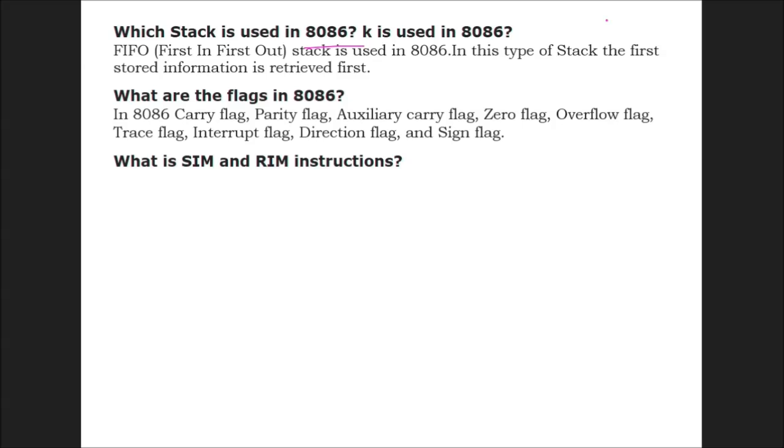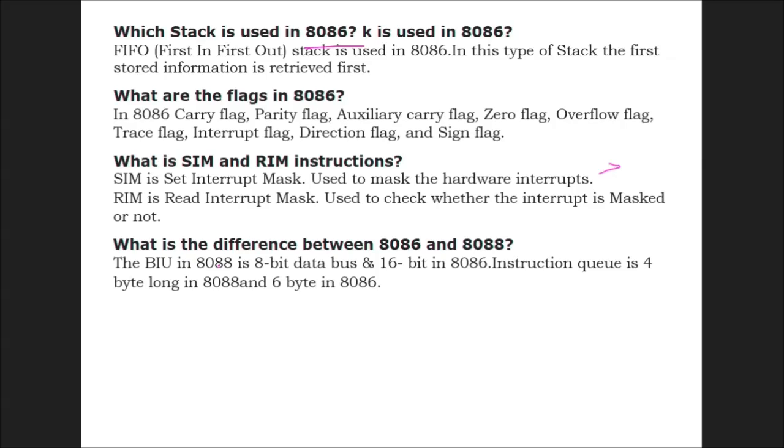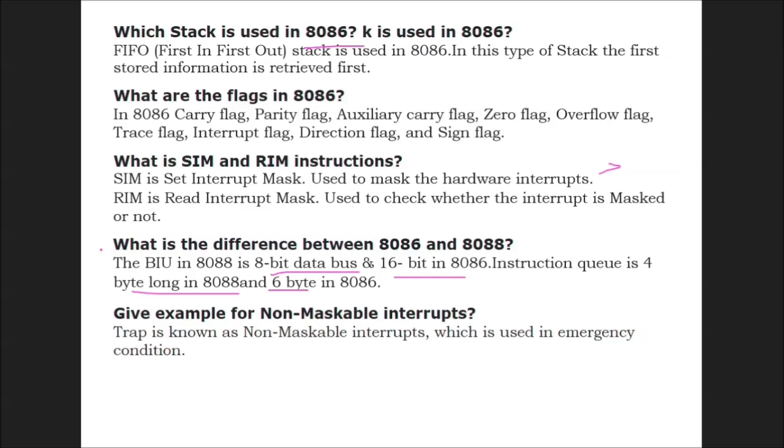What are the flags in 8086? These are important questions, so I've tried to go over them again. Coming to SIM and RIM instruction: SIM is Set Interrupt Mask, used to mask the hardware interrupts. RIM is Read Interrupt Mask, used to check whether the interrupt is masked or not. What is the difference between 8086 and 8088? The BIU in 8088 has an 8-bit data bus and 16-bit in 8086. The instruction queue is 4 bytes long in 8088 and 6 bytes in 8086. Give an example of non-maskable interrupts: TRAP is known as a non-maskable interrupt used in emergency conditions.